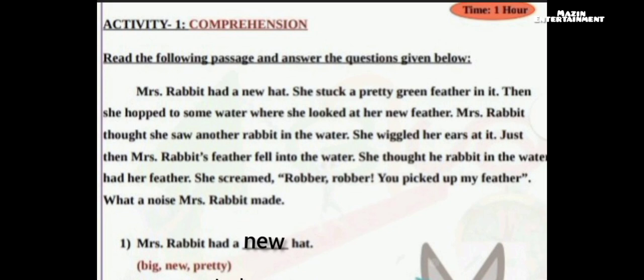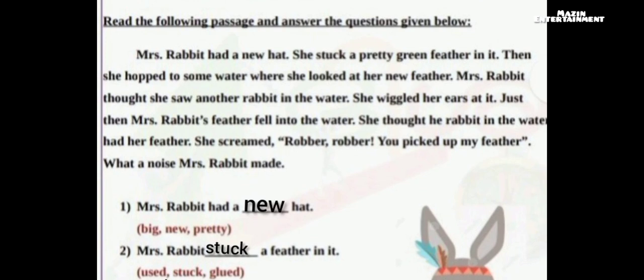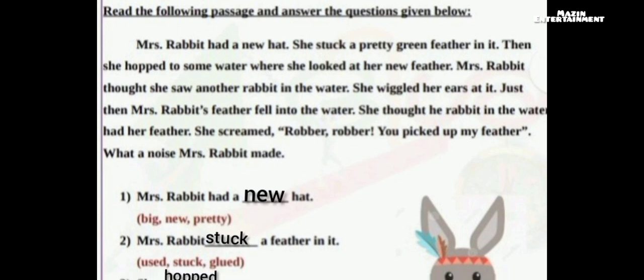Activity 1: Comprehension. Read the following passage and answer the questions given below. Mr. Rabbit had a new hat. She stuck a pretty green feather in it. Then she hopped to some water where she looked at her new feather. Miss Rabbit thought she saw another rabbit in the water. She wiggled her ears. Just then, Mr. Rabbit's feather fell into the water. She thought the rabbit in the water had her feather. She screamed, 'Robber, robber, you picked up my feather!' What a noise Mr. Rabbit made.